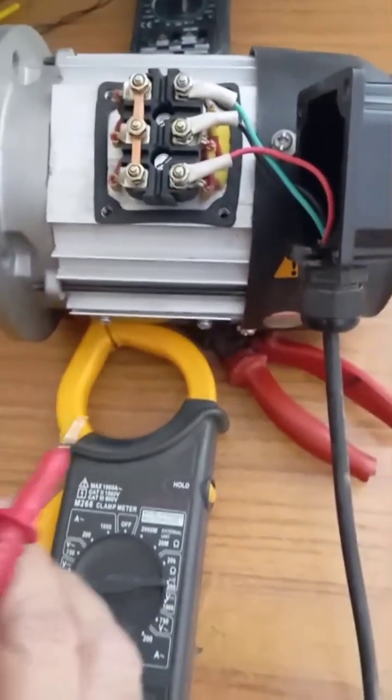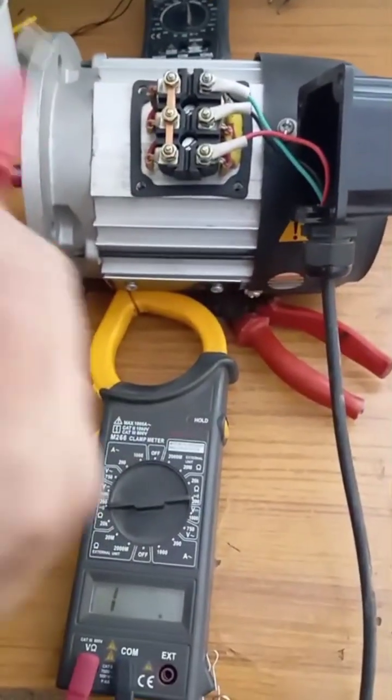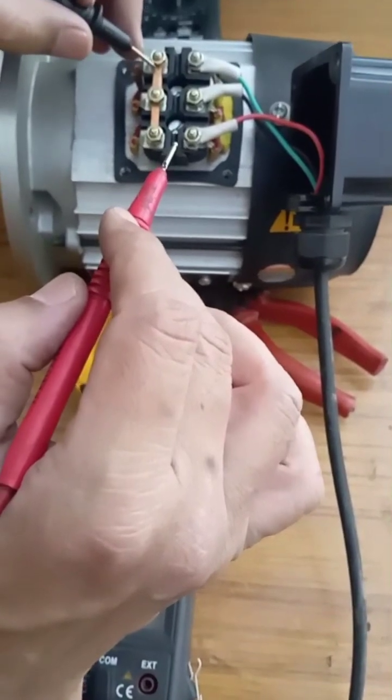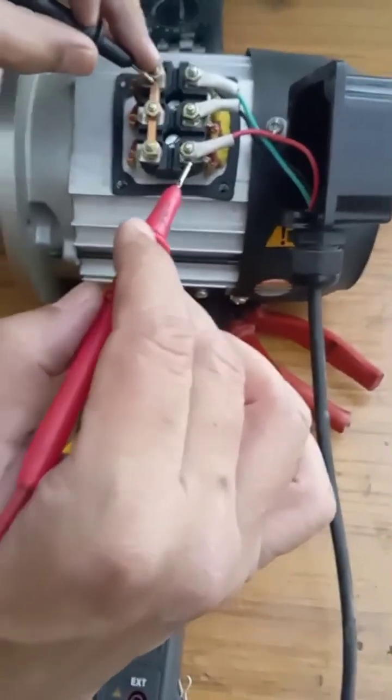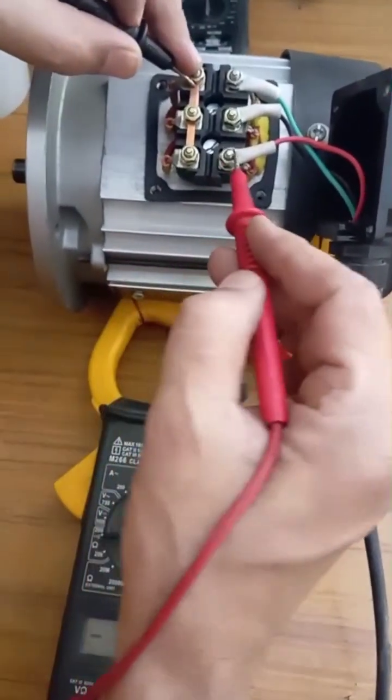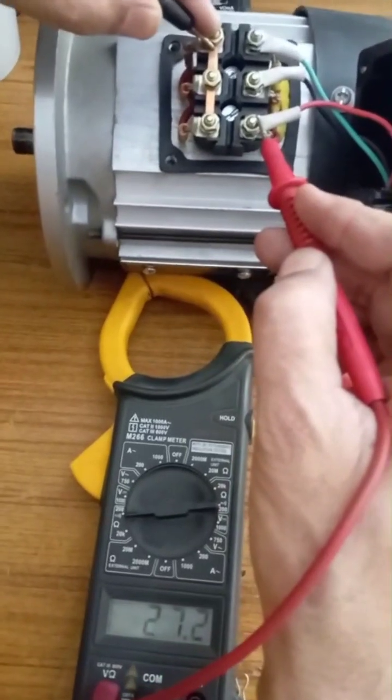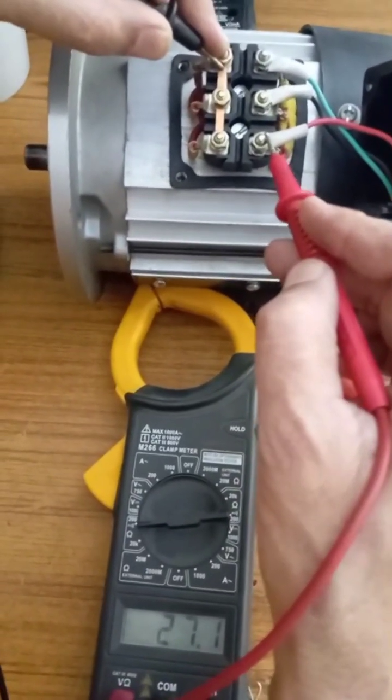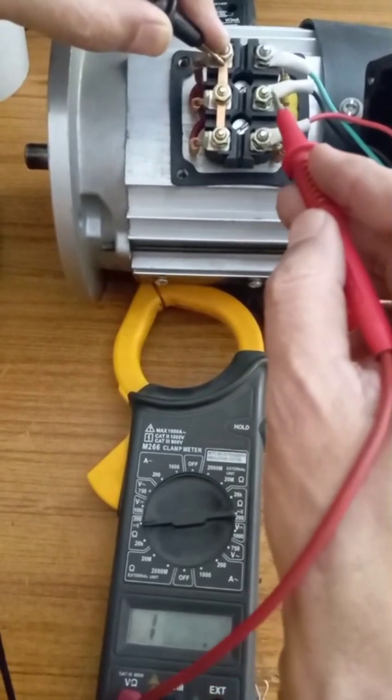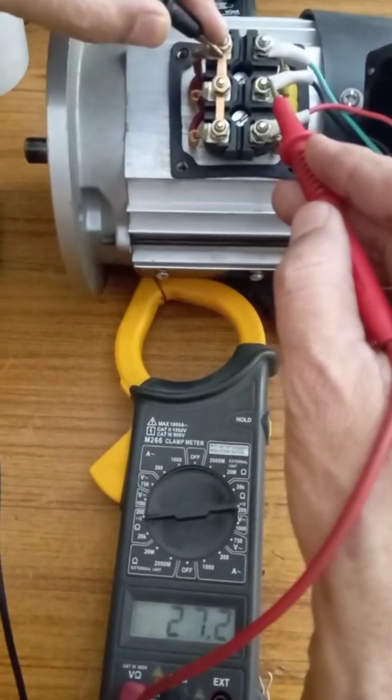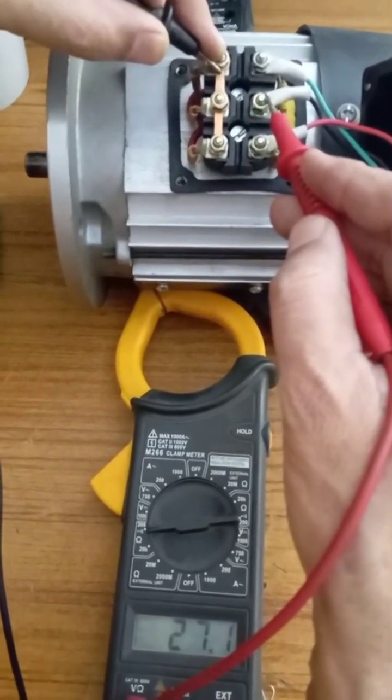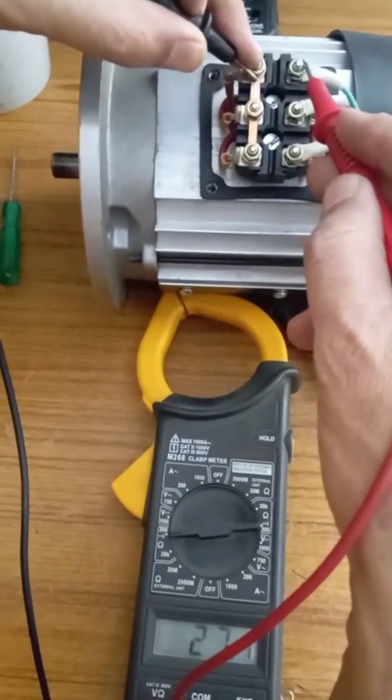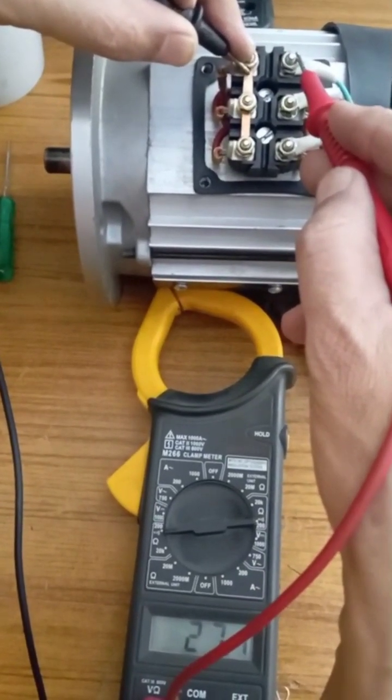Now we will check continuity between the terminals. Let us put one lead to the common terminal. Then it is 27.1 ohm, with other terminal it is almost same 27.1, with third terminal it is also same 27.1.